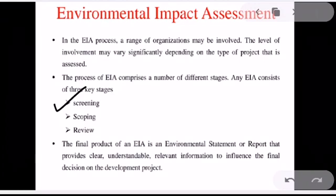If an EIA is required, then the second stage starts. The second stage is called scoping. Scoping identifies what constitutes relevant information to be identified and assessed with respect to the key impacts of the proposed development. Different proposed developments require identification of different relevant information, and this is determined in the scoping stage. The results from the scoping process are reported to relevant decision makers in the form of an environmental impact assessment report, which is based on a set of statements.